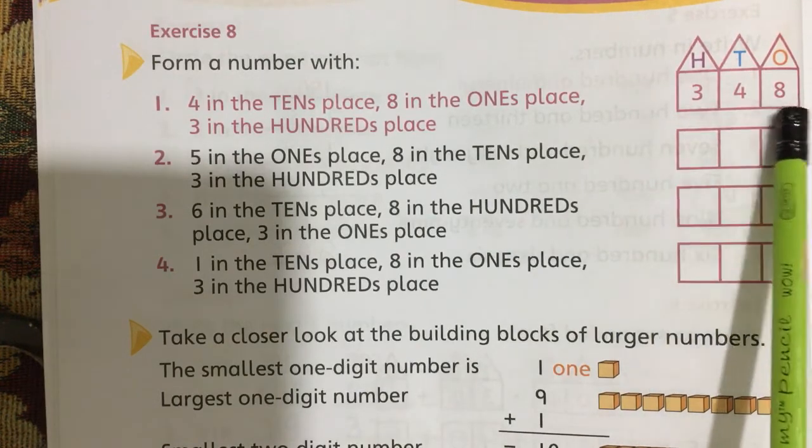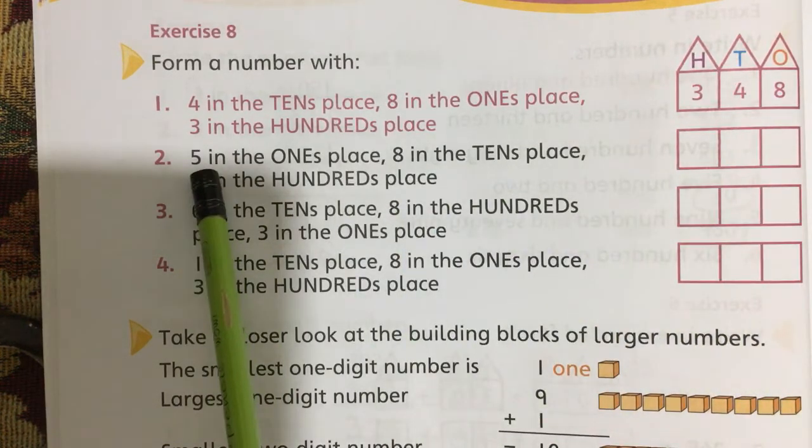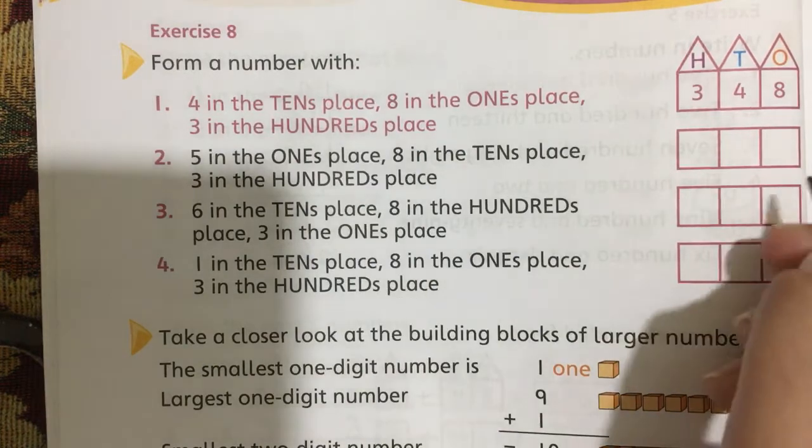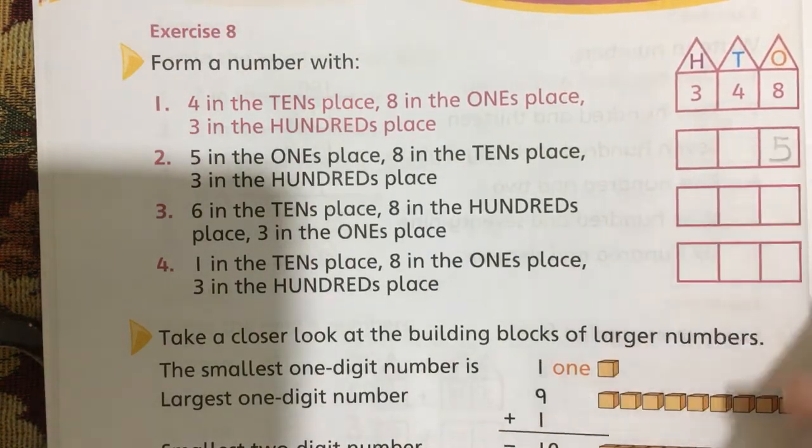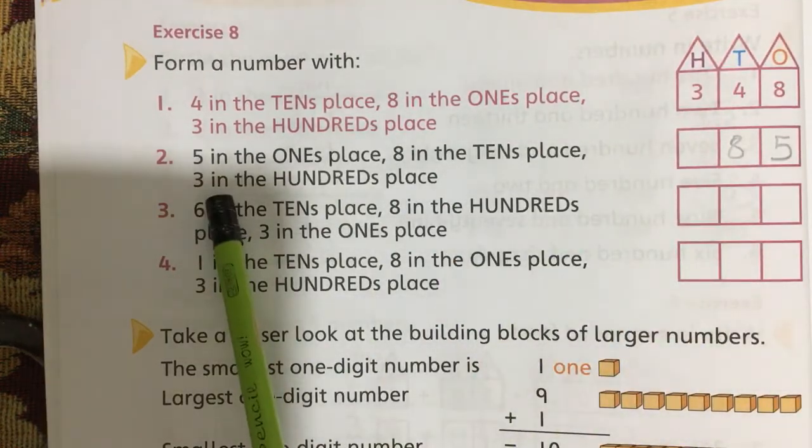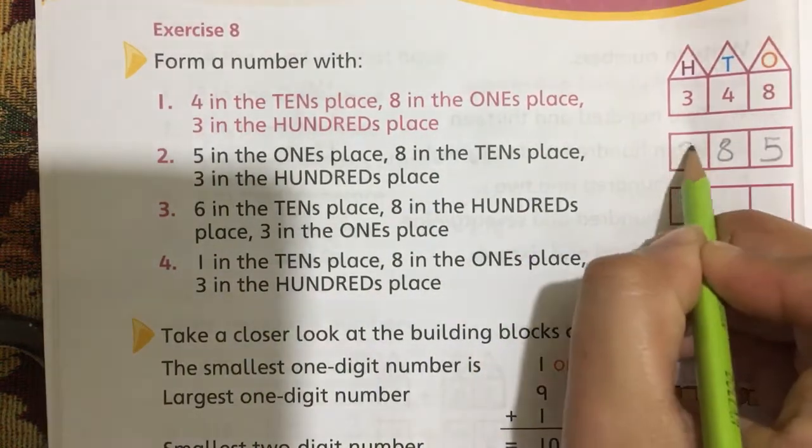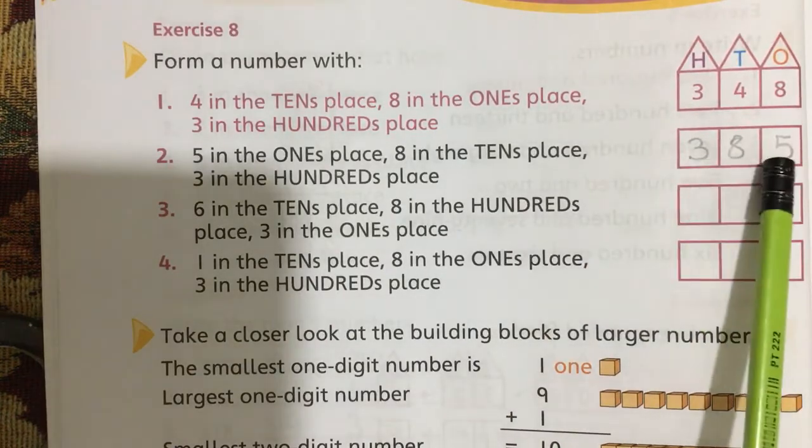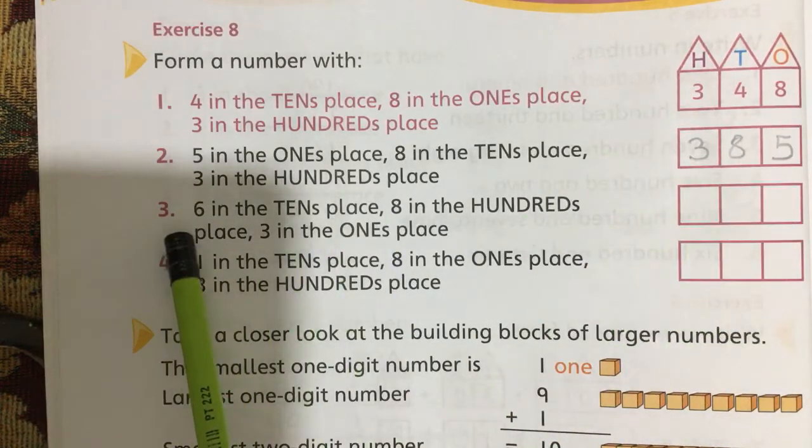Next question is 5 in the ones place, write 5 in the ones place, 8 in the tens place, 8 in the tens place, 3 in the hundreds place. So the number becomes 385.